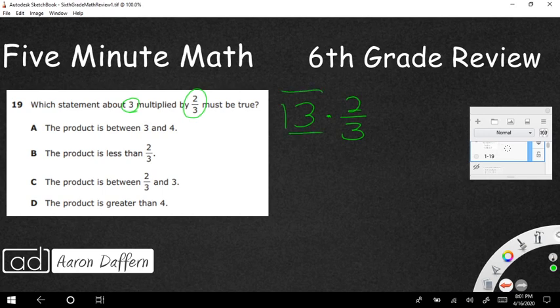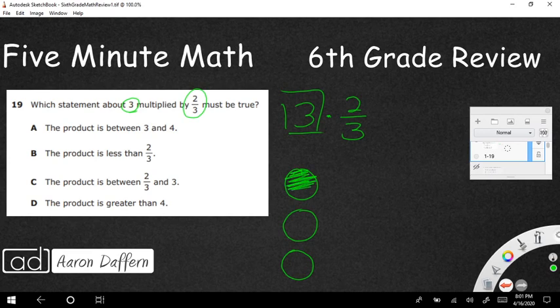Well, let me draw a picture. So I'm going to represent this three. I'm just going to represent this with three circles. So there we go. There's my three circles. And I want to take two-thirds of that.